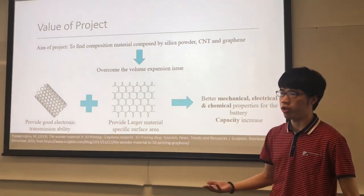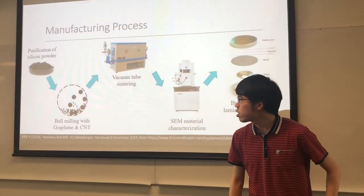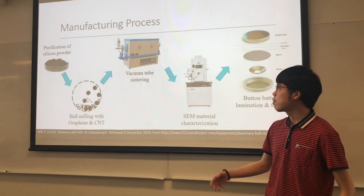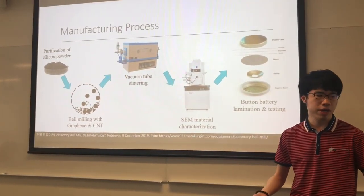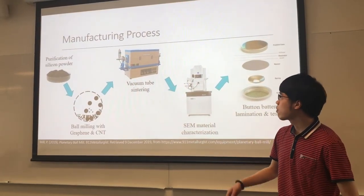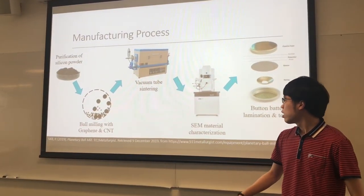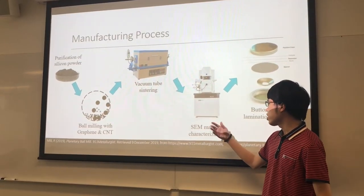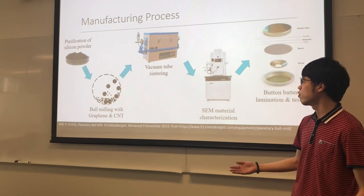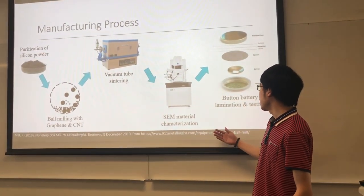This approach also increases capacity. The entire button cell was prepared in the following steps: first, high-purity silicon powder was ball-milled with carbon nanotubes and graphene. After a drying process, it was sent to a vacuum tube sintering stage. We then used SEM and XRD devices to check the material characterization and find which recipe gives the best results, in preparation for later assembly and charge-discharge testing.